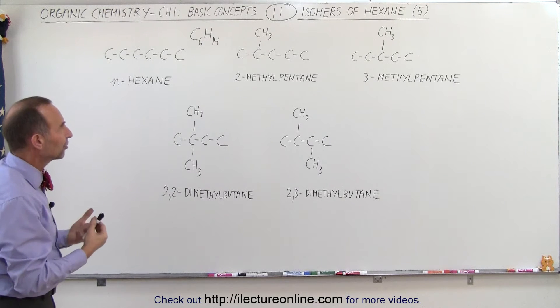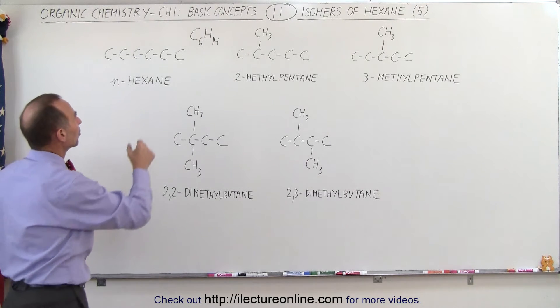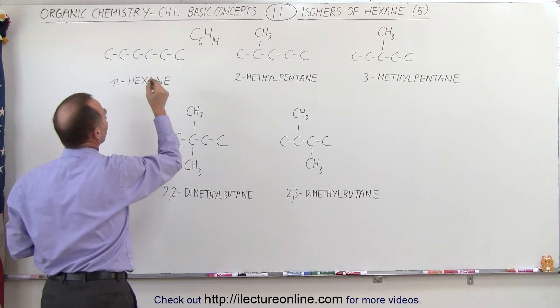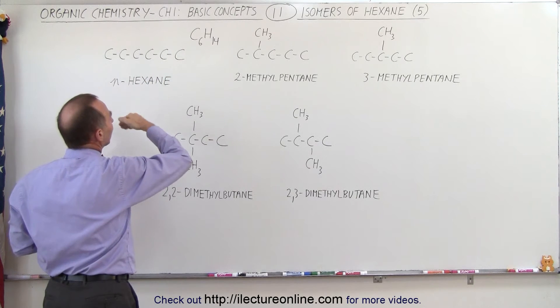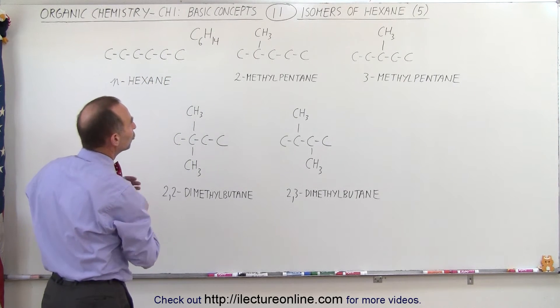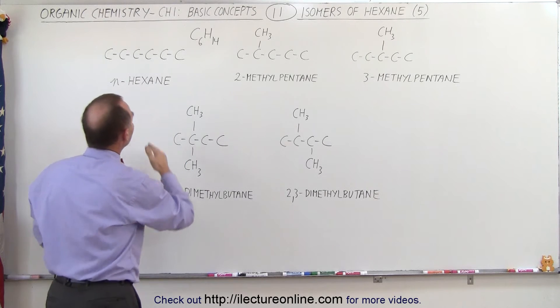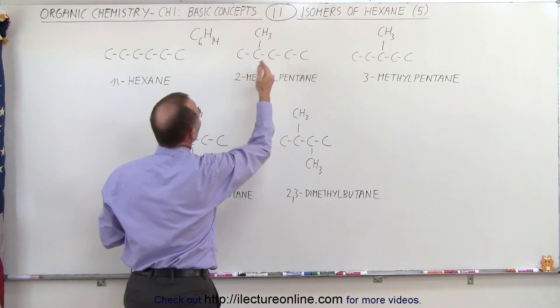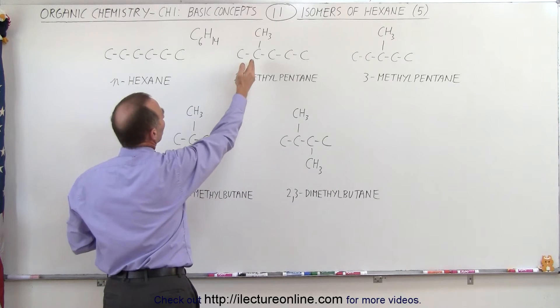So what are some of the isomers? Well, the first thing we can do is remove one of the carbons and three hydrogens, make a methyl subgroup of that, or a methyl group of that, and attach it to any of the carbons in the middle.